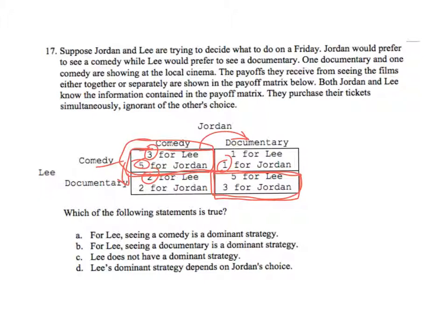Which of the statements is true? For Lee, seeing a comedy is a dominant strategy? Nope. Notice that Lee doesn't have a dominant strategy, neither does Jordan. Their best move depends on what the other is doing. If the other changes their move, the one player's best move changes. For Lee, seeing a documentary is it? No, that's not true either. Lee does not have a dominant strategy — okay, well, that's true. And then finally, Lee's dominant strategy depends on Jordan? No — if his strategy depended on Jordan's choice, it wouldn't be a dominant strategy. So C is the only right answer. This is a definition — a little bit of practice with this stuff. You guys are going to be awesome.